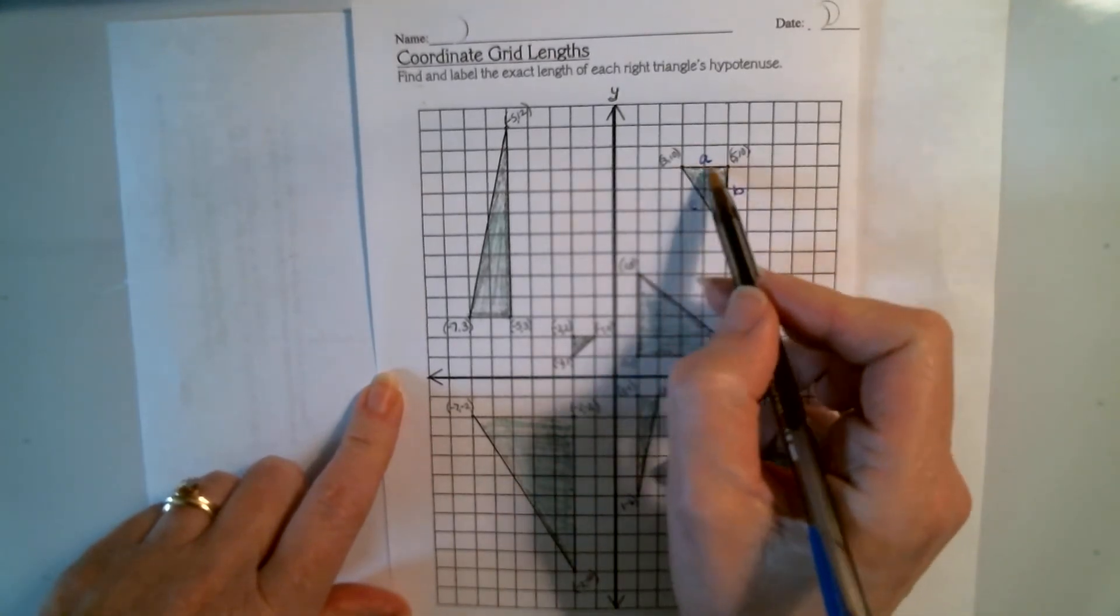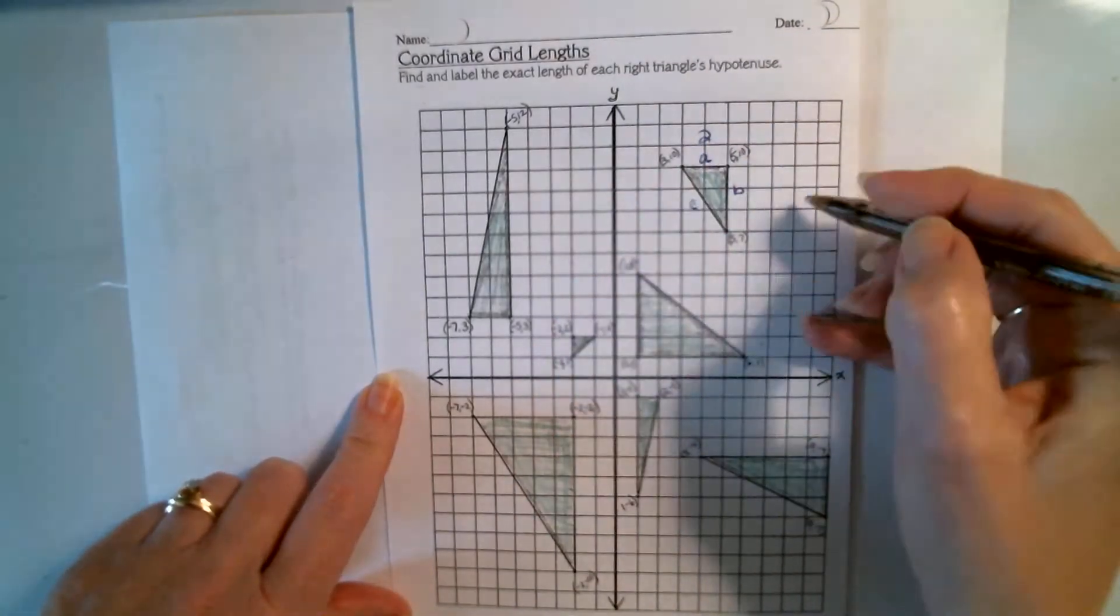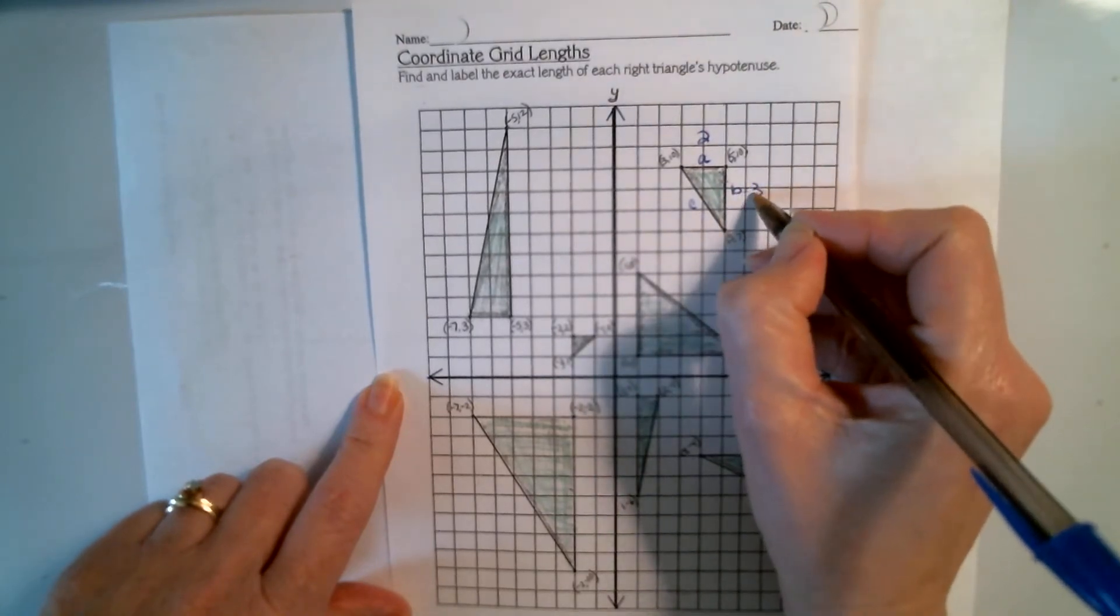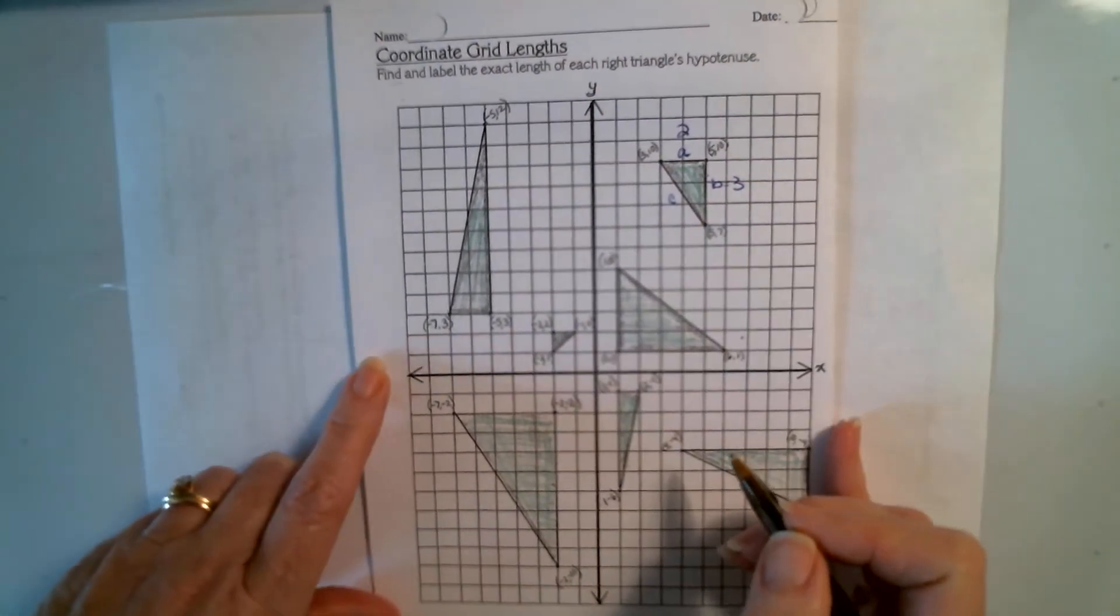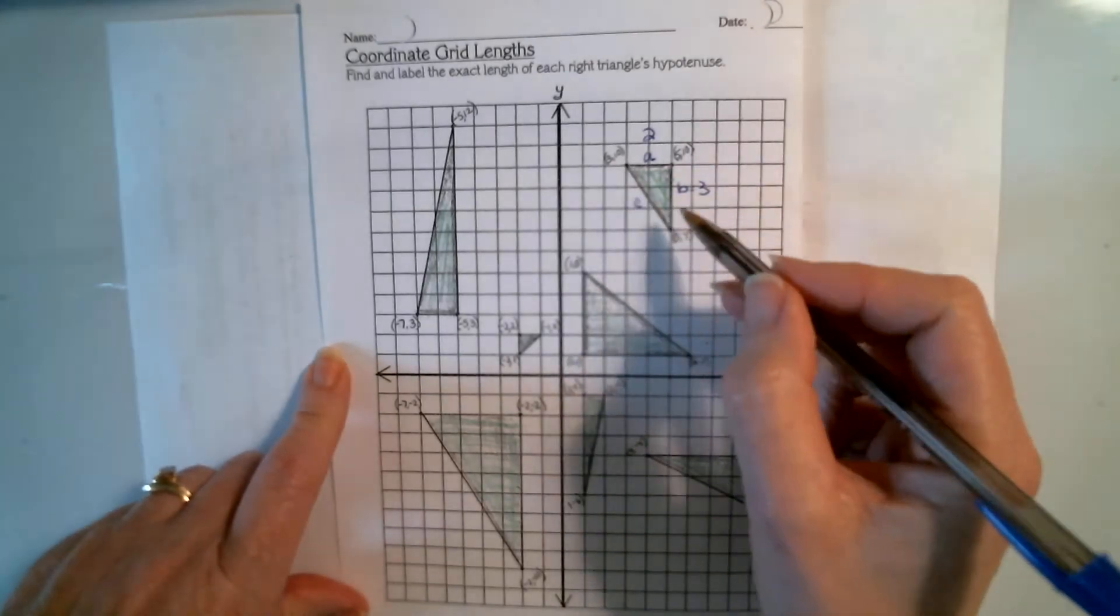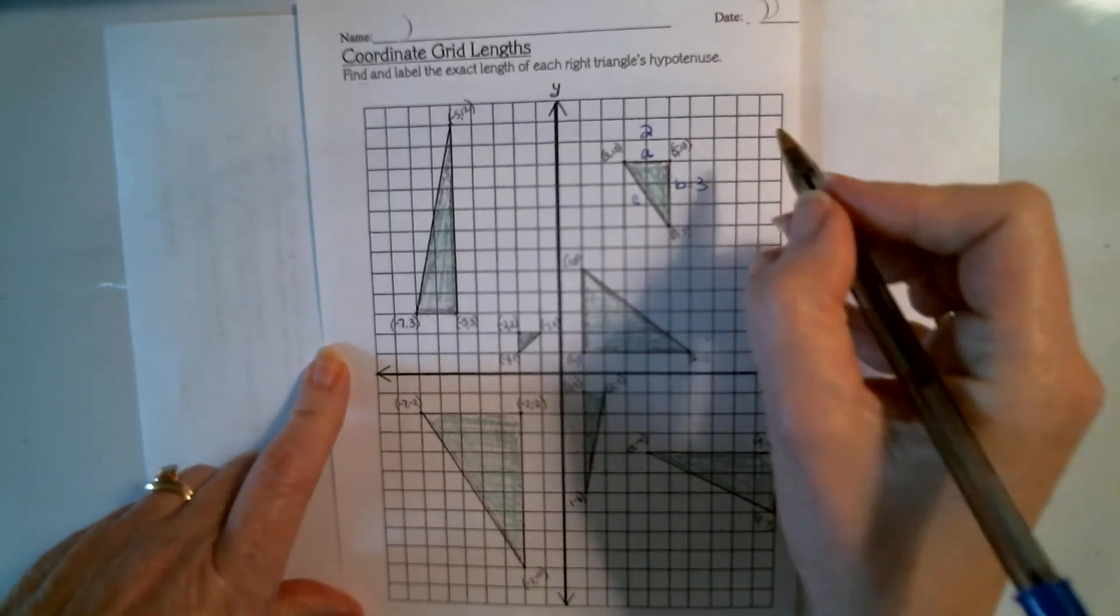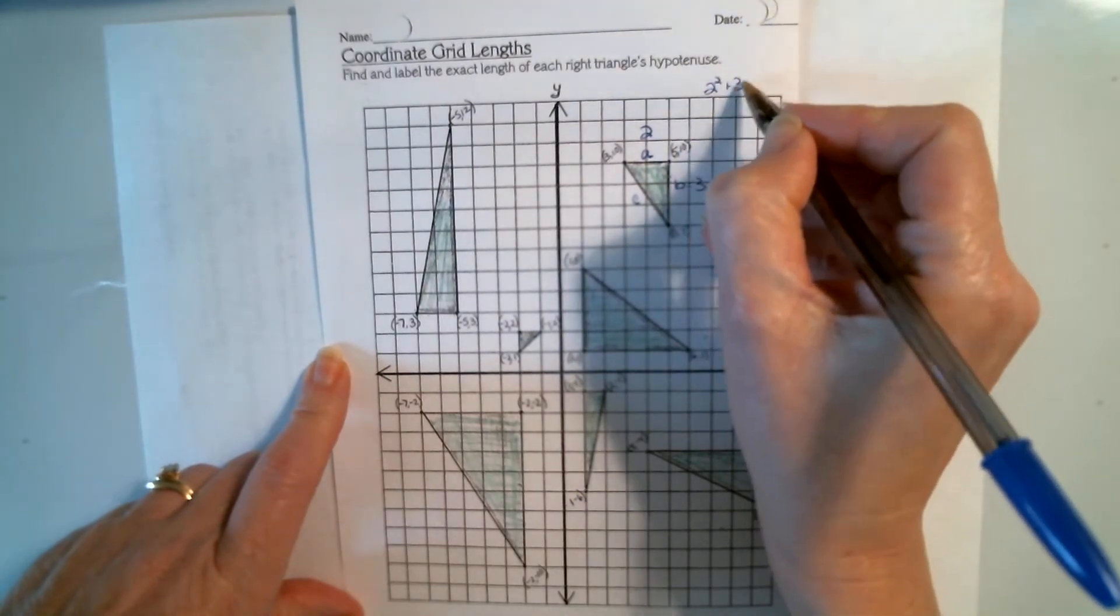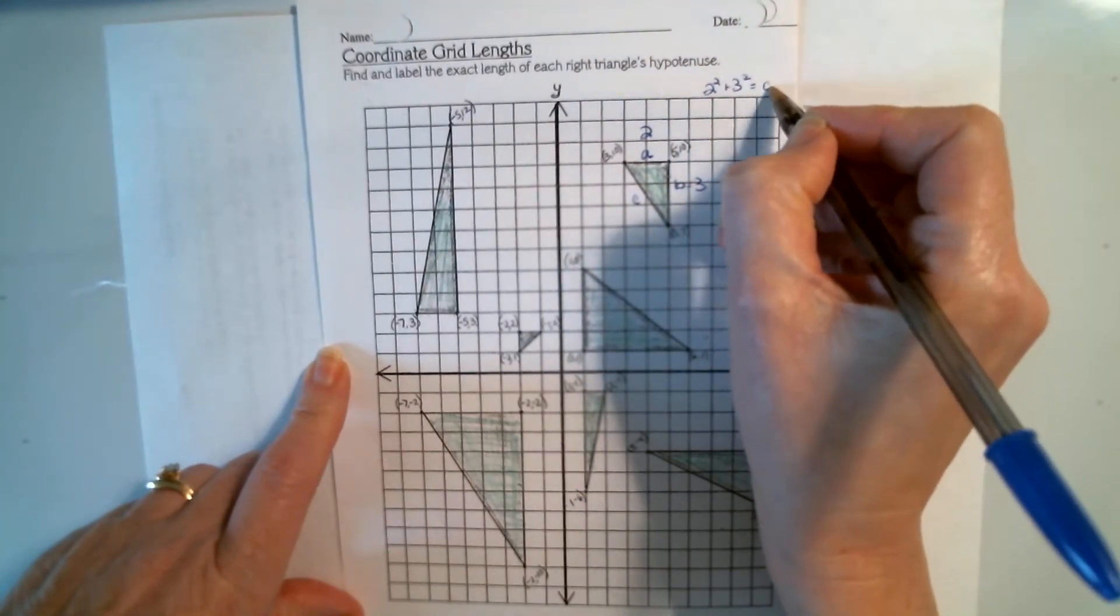Now, I can count that this has a length of 2 and this has a length of 3. And so for me to figure out what is the hypotenuse, I'm going to use Pythagorean theorem. Let's see if I can squeeze it up here. That 2 squared plus 3 squared equals c squared.